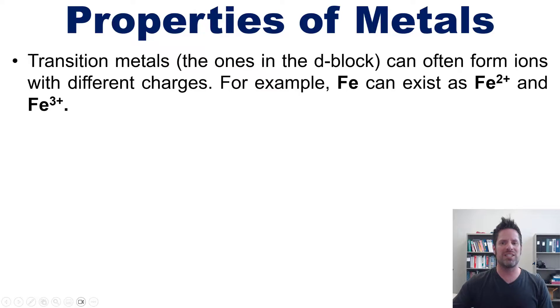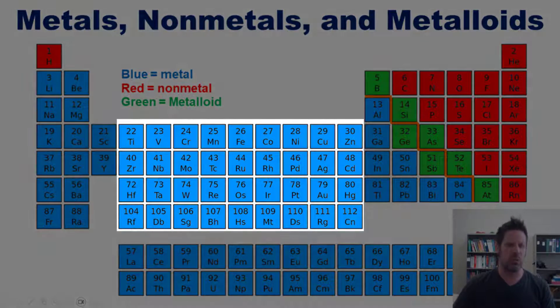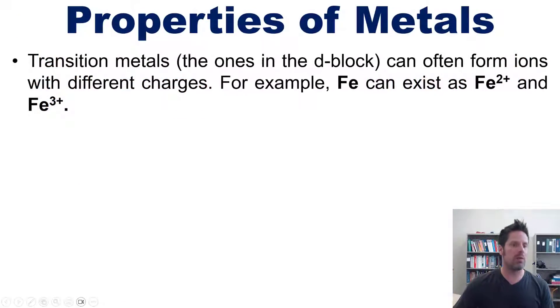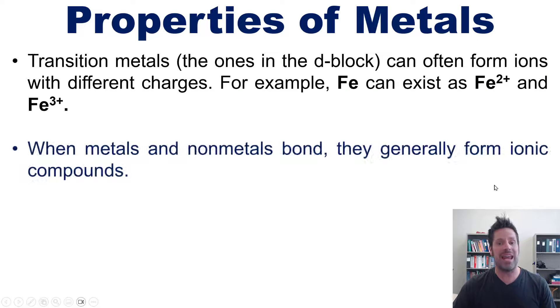Now transition metals, which are the ones in the D block, which is this region right here, can often form ions with different charges. For example, neutral iron can exist as iron 2 plus and iron 3 plus. Additionally, when metals and nonmetals bond to each other, they generally form ionic compounds in which the metals lose electrons and give them more or less fully to the nonmetals, and the nonmetals take them. Thus, we end up with cations and anions associating ionically with each other.